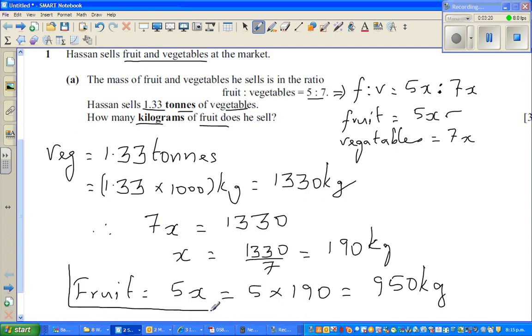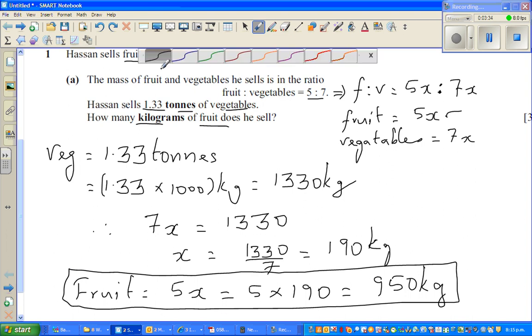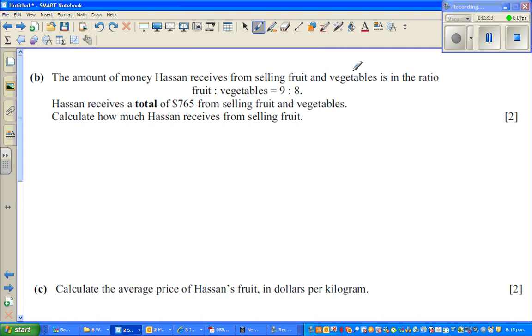This information is very important for the next question. So fruit is 950 kgs. The amount of money Hassan receives from selling fruit and vegetables is in the ratio 9 to 8. So F to V is 9A to 8A. That means in fruit he got 9A dollars and in vegetables he got 8A dollars. So total he got 9A plus 8A, which is 17A.